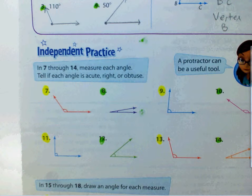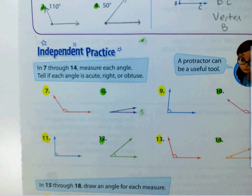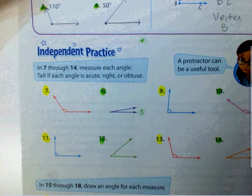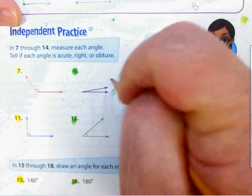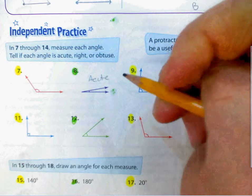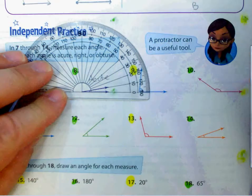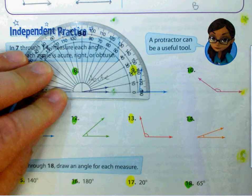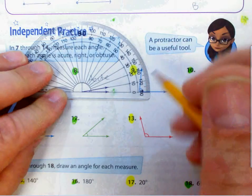Instructions for the independent practice: in seven through fourteen, measure each angle and tell if each angle is acute, right, or obtuse. We're going to do the even ones together and you'll do the odd ones on your own. On question number eight, I can see that's an acute angle. I'm going to go ahead and measure it. I'll line it up and I can see that it intersects right at the ten degree mark. It's not 170 because it's not an obtuse angle — it's an acute angle, and it is ten degrees.